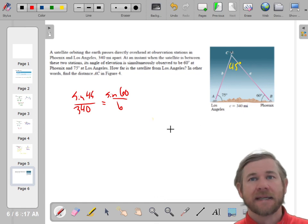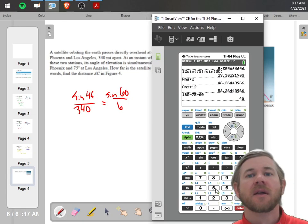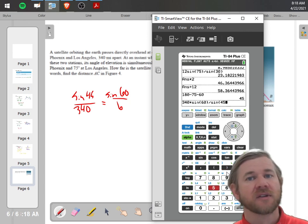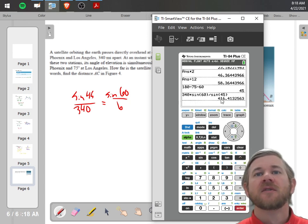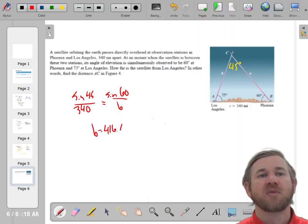So now, last thing I'm going to do is cross multiply. And we'll wrap this up. 340 times the sine of 60. That's also on the unit circle. Divided by the sine of 45. That's on the unit circle. We get this one exactly. 416.41 B equals 416.41.